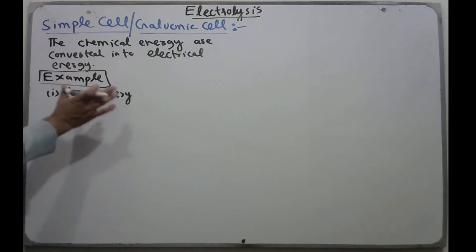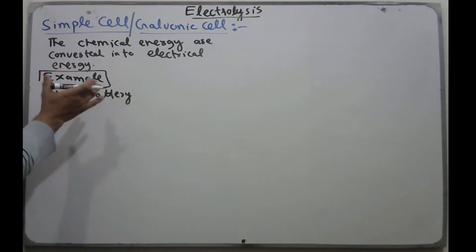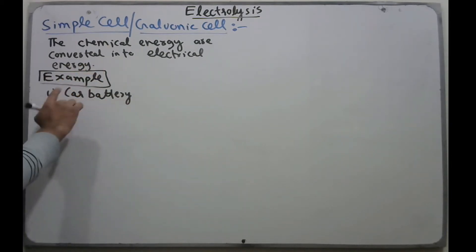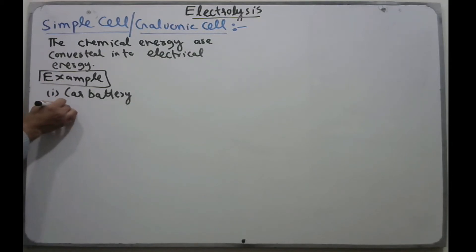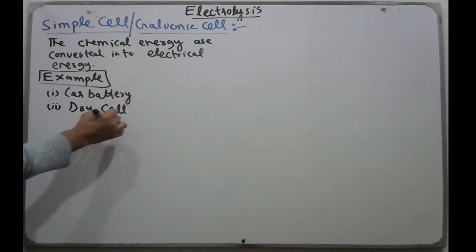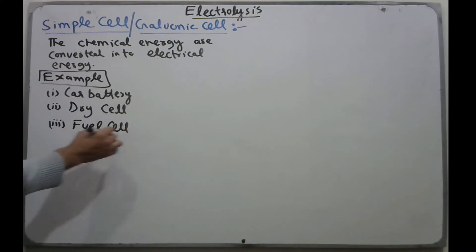Examples of these cells in daily life: a car battery uses six simple cells to produce 12 volts of electric current. Dry cells are used in wall clocks, remotes, and many other things. We also have fuel cells.